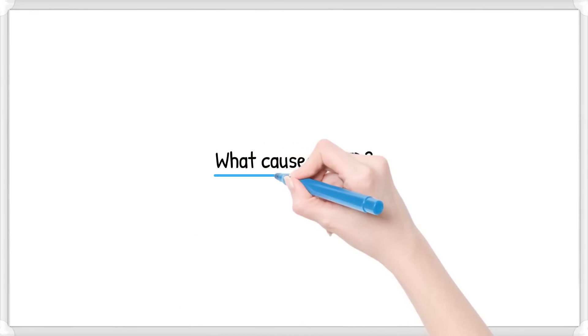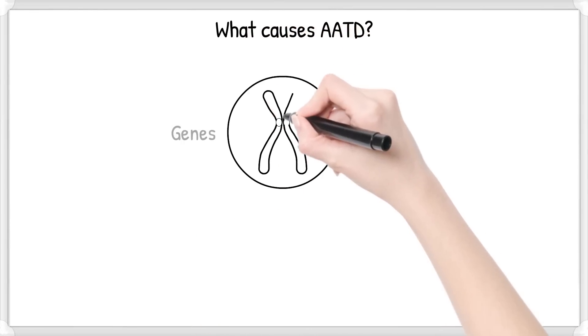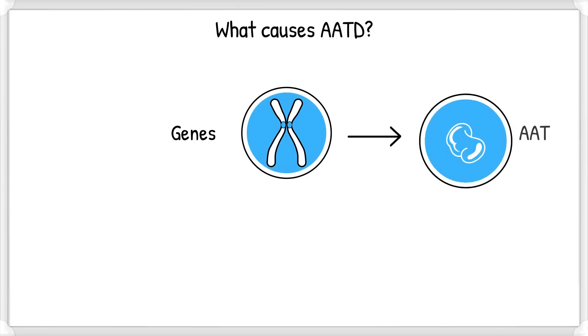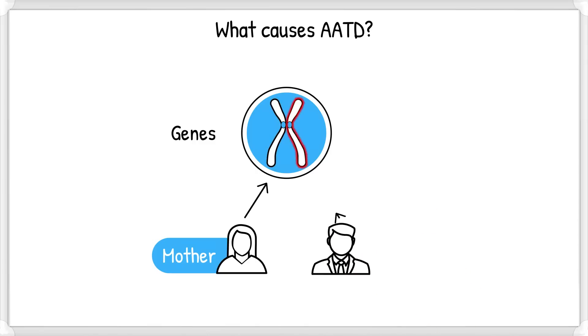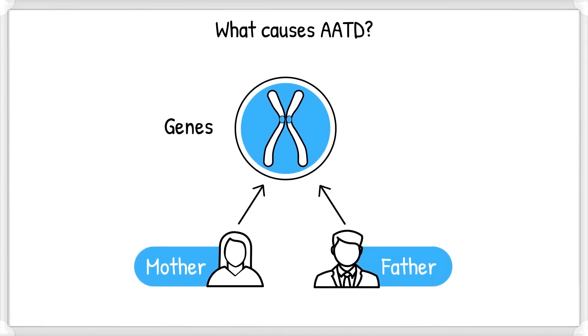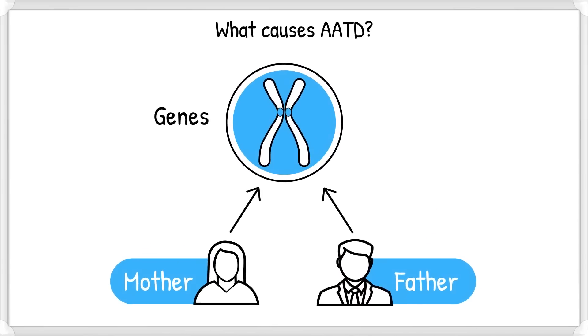So, what causes AATD, and how do you know if you have it? The answer is in your genes. Genes make proteins such as AAT, and we have two copies of each gene, one from our mother and one from our father. Individuals with two good copies for AAT don't experience symptoms.